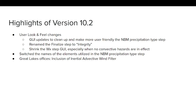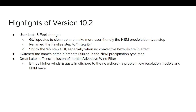For the Great Lakes offices, there has been inclusion of the initial effective wind filter process developed in Detroit. This comes from feedback that winds and gusts were never high enough in the near shore — they would always be maximized offshore and never reach the shoreline — due to low resolution models and the MBM incorporating much of that. This will be a bit of a band-aid to help improve the near-shore winds.